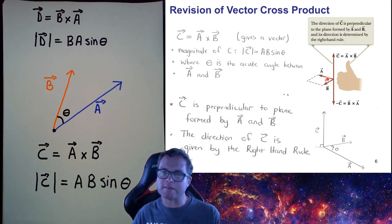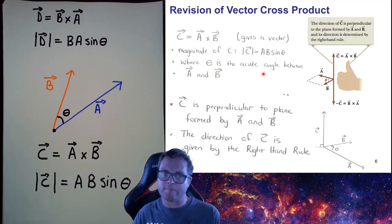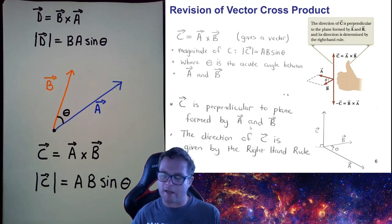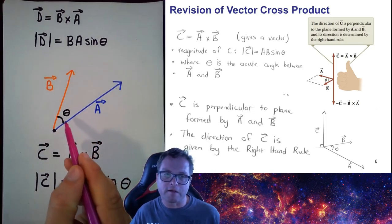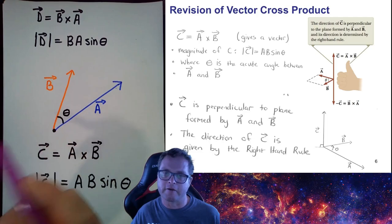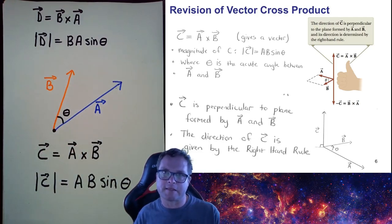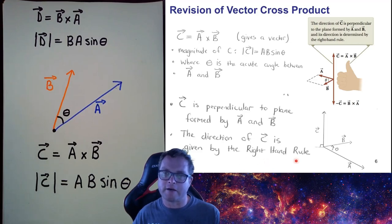To summarize: given two vectors A and B with C = A × B, the magnitude is |A||B|sin(θ), where θ is the acute angle between A and B. C is perpendicular to the plane formed by A and B, and its direction is given by the right hand rule. A × B is out of the page, and B × A is into the page.